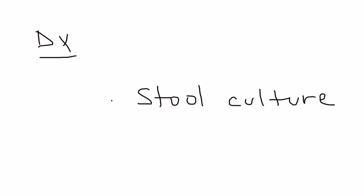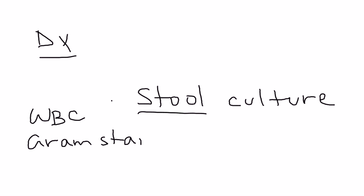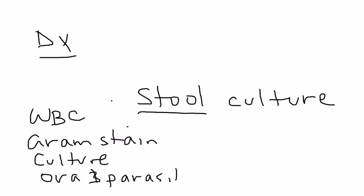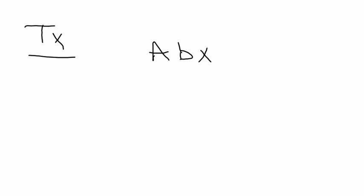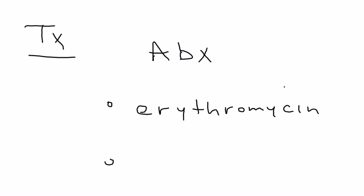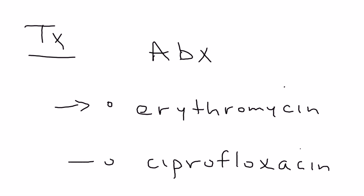For diagnosis, you perform a stool culture. There are many different tests you can do with stool: check for WBC count, gram stain, culture, ova and parasites, and blood. A stool culture will give you the correct organism involved. Treatment is antibiotics — the most commonly used are erythromycin-type antibiotics such as erythromycin and azithromycin, and also ciprofloxacin, which is probably preferred due to growing resistance patterns.